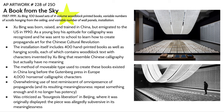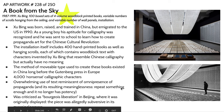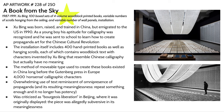Our third piece is called A Book from the Sky by Xu Bing. He was born, raised, and trained as an artist in China, but emigrated to the United States in 1990. Much of his artwork was not well received by the Chinese government — this particular piece was called Bourgeoisie Liberation in Beijing where it was originally displayed, and it was allegedly subversive in its meaninglessness.